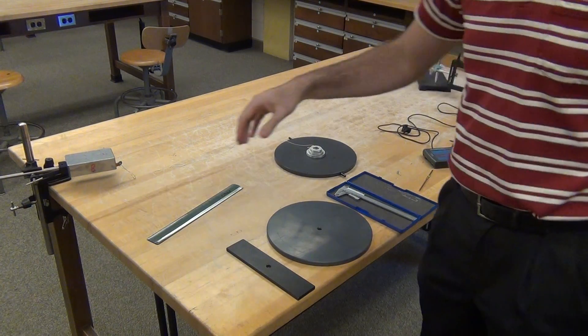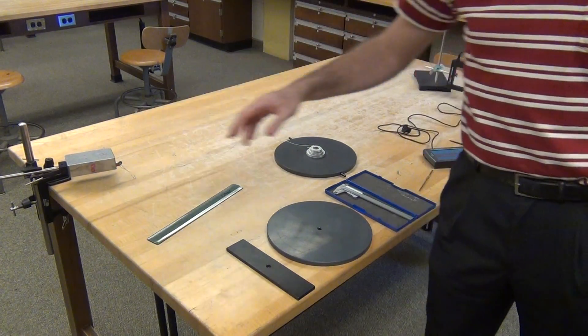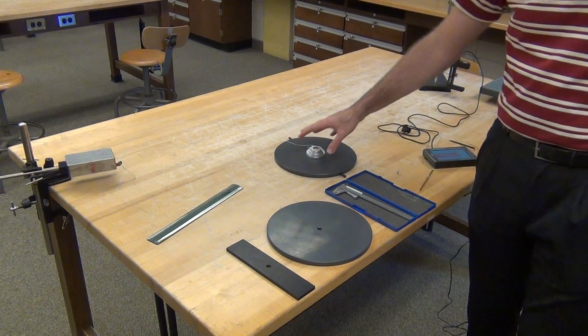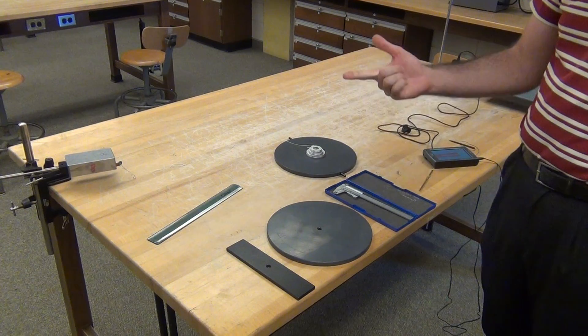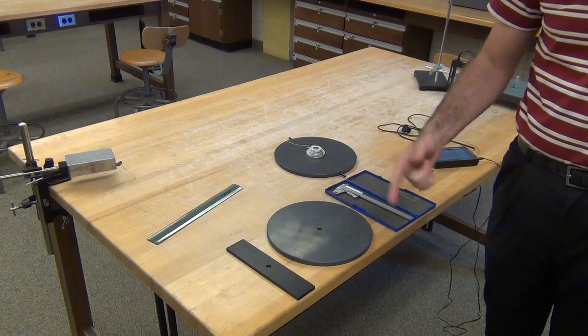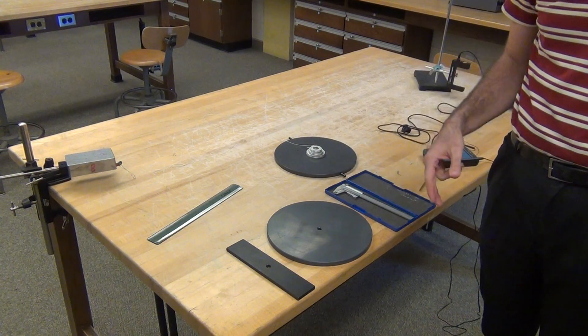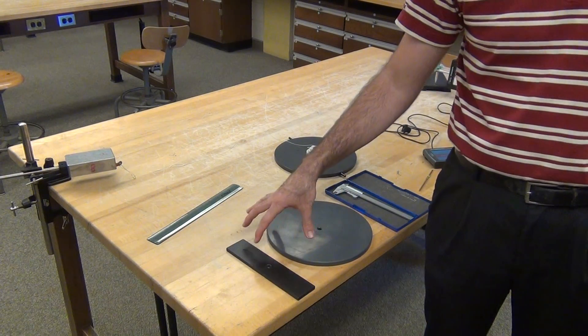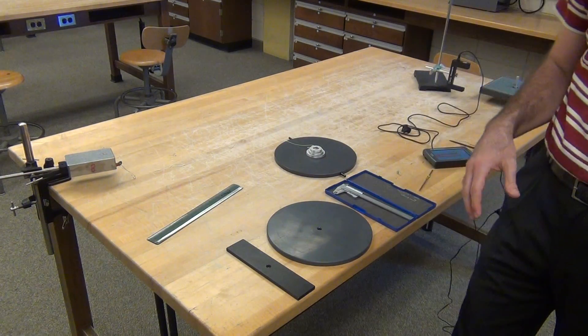In this lab, we'll use a calibrated torsional spring to spin a disk. By measuring the torque and the angular acceleration, we can infer the moment of inertia of the disk, and then we'll add other things and look at how that moment of inertia changes.